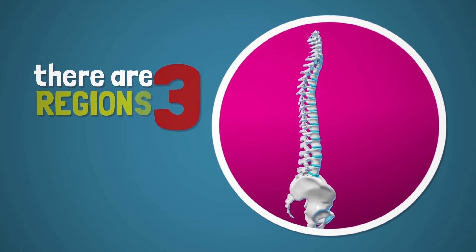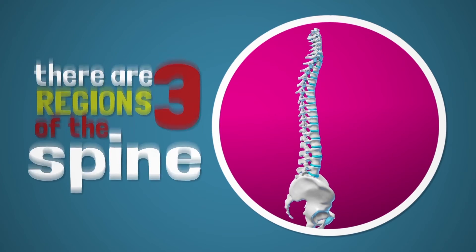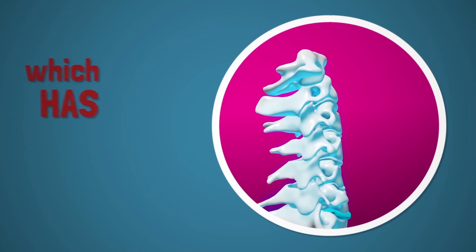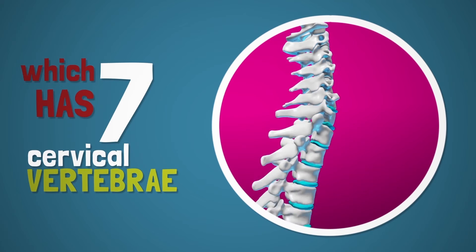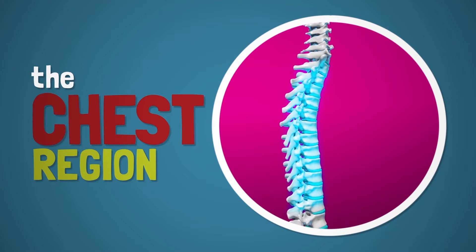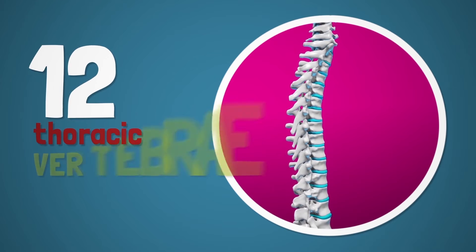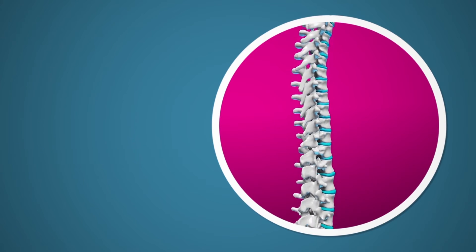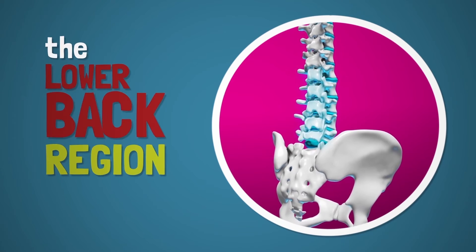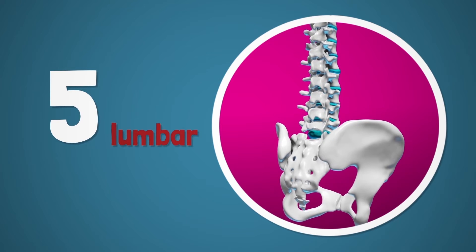There are three regions of the spine. The first is the neck region, which has seven cervical vertebrae. The second is the chest region, which has 12 thoracic vertebrae. And the third is the lower back region, which has five lumbar vertebrae.